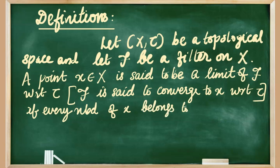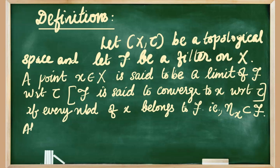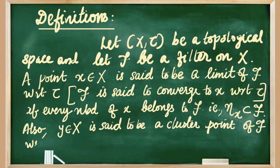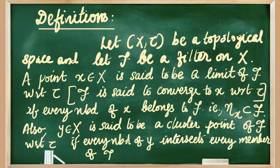That is, if N(x) is a sub-family of the filter F. Also, y element of the space X is said to be a cluster point of the filter F with respect to the topology τ if every neighborhood of y intersects every member of filter F — that is, if N(y), the neighborhood system at y, union filter F has the finite intersection property (FIP). Then we say that y is a cluster point of the filter F.